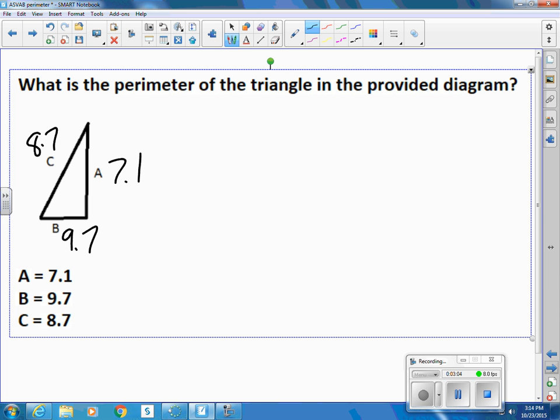So the perimeter is all the way around. So we do 8.7 plus 7.1. That gives us... 8 and 7 is 15.